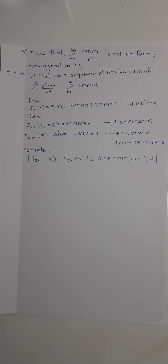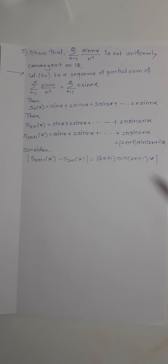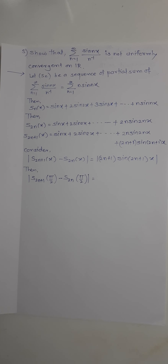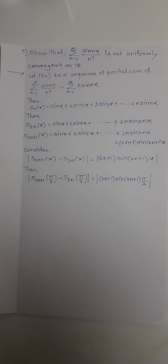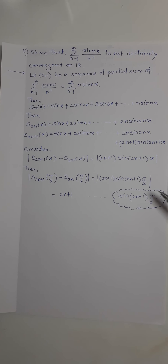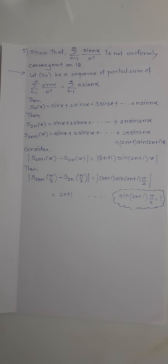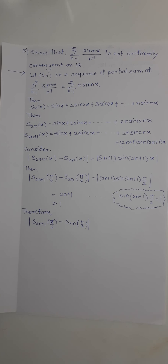Now purposely, we put x = π/2. So |S_{2n+1}(π/2) − S_{2n}(π/2)| = (2n+1)·sin((2n+1)π/2). The well-known value sin((2n+1)π/2) = 1, so this equals 2n+1, which is clearly greater than 1.